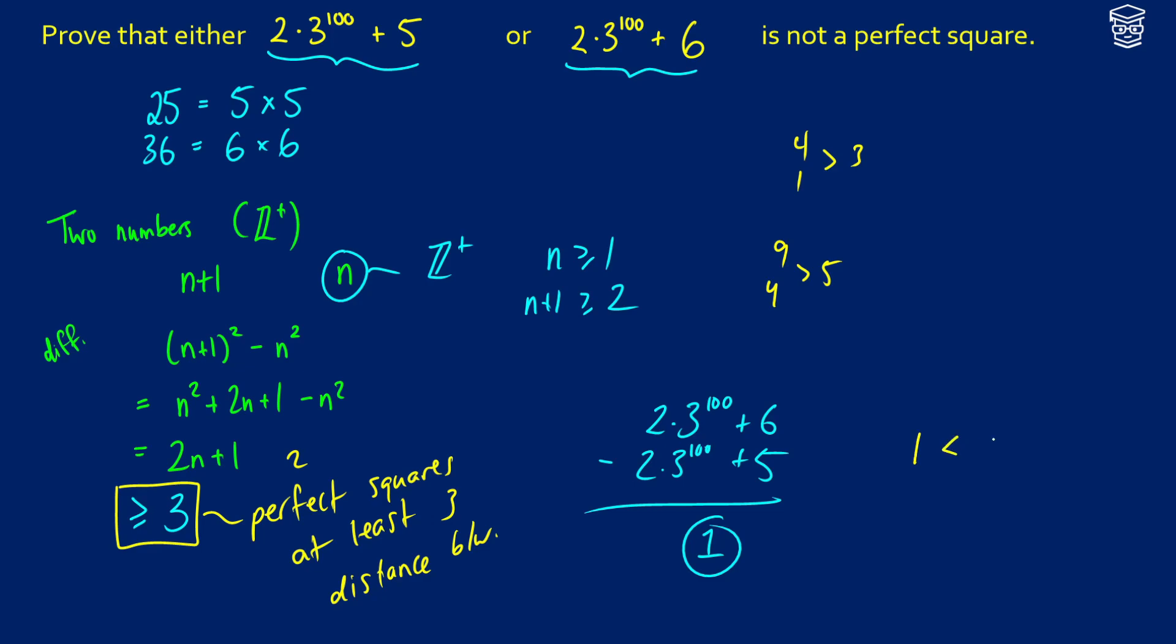And what do we know? 1 is less than 3. So because 1 is less than 3, we know that both of these numbers cannot be perfect squares.